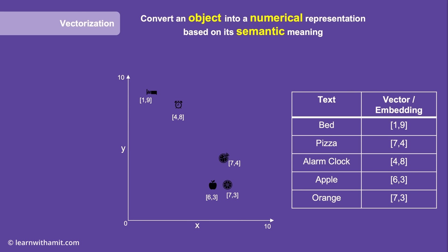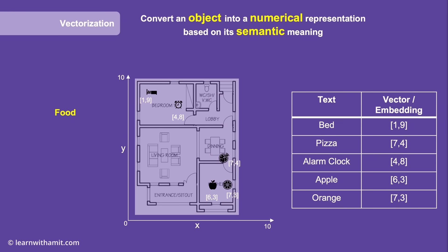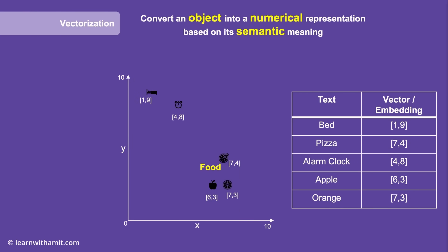Now let's say we need to find all the food items from this database table. If we do a regular text search, we will not get any result because there is no item called food in this table — nothing even close to the word food. But we know there are items in this table related to food. If we bring the floor map again and place the word food on it, food would belong close to the kitchen and dining area. Then we figure out the coordinates for the word food, and based on those coordinates we can find items in close proximity — this returns pizza, apple, and orange. This technique is called proximity search.